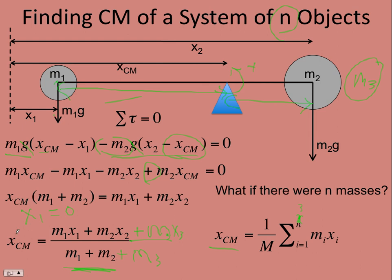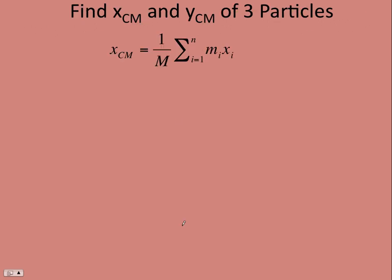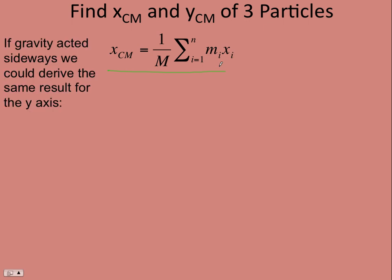And so you can see what it would be for four and so on. So let's do an example using this. But we also need an equation for y center of mass. In other words, if we had a y coordinate here, how we would measure it relative to that. And for that, we would imagine gravity acts sideways, go through the same process, and we'll see what we come up with. And so, yeah, capital M is total mass. And so here's the equation we just derived. You'll see it in the book. If gravity acted sideways, we could derive the same result for the y axis, and we'd get this.